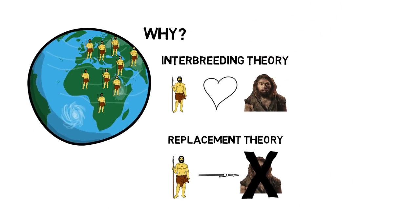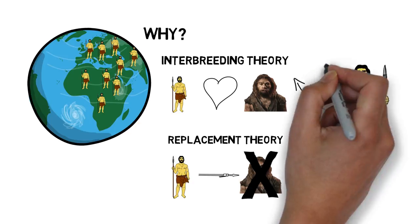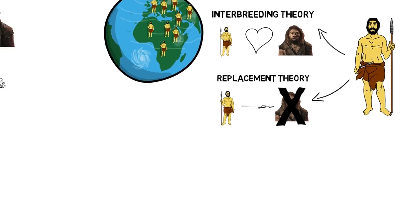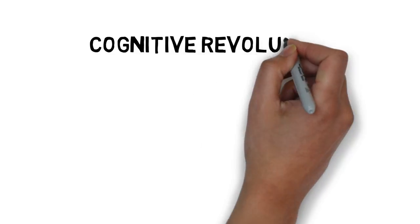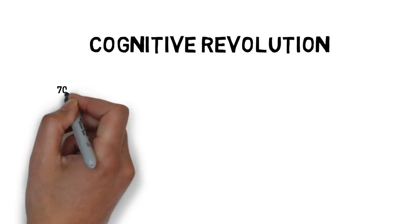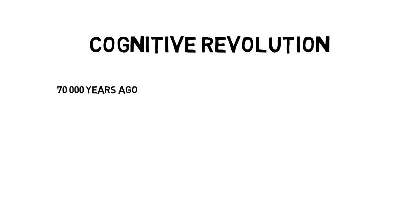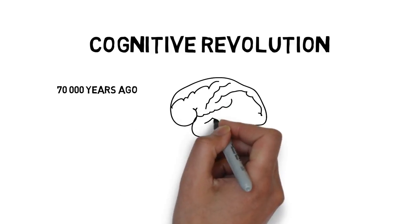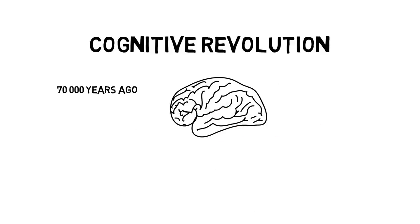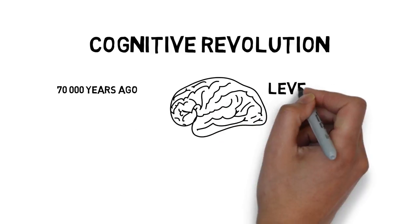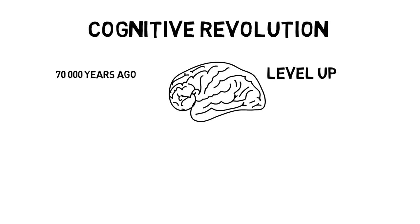Probably both are likely to be correct. Homo sapiens probably drove the other species toward annihilation and simultaneously interbred with them. About 70,000 years ago, the brain of early modern humans went through an evolutionary leap known as the cognitive revolution.